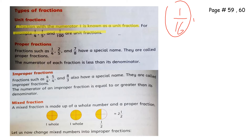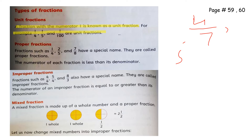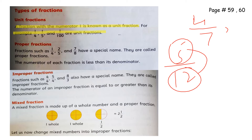The next one is proper fraction. A proper fraction is when the numerator is less than the denominator. For example, 4 by 7 and 5 by 12. When the top number — the numerator — is smaller than the bottom number — the denominator — that is called a proper fraction.